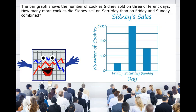Let's try this problem. The bar graph shows the number of cookies Sydney sold on three different days. How many more cookies did Sydney sell on Saturday than on Friday and Sunday combined? First, let's figure out how many cookies she sold each day. Let's check out the scale on this graph. It goes from 0 to 40. That means the line in the very middle of 0 and 40 must be 20. So our scale is going by 20s.